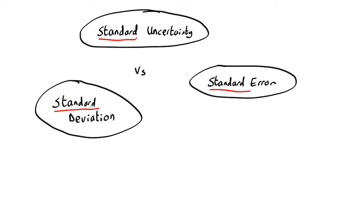What is the difference between these things? Which do you use? Where? Now the easiest thing is standard uncertainty versus standard error, because they're the same thing. Same thing.